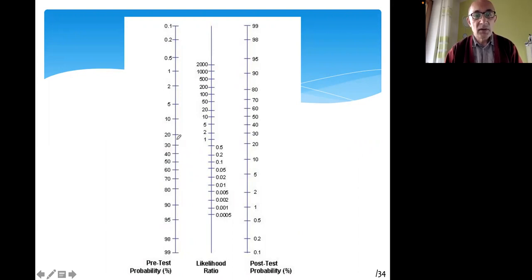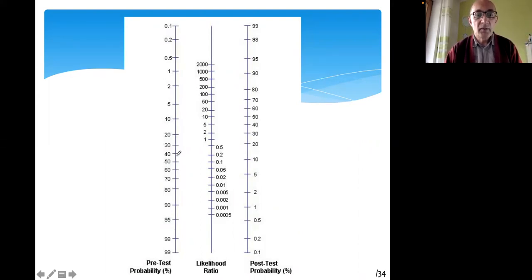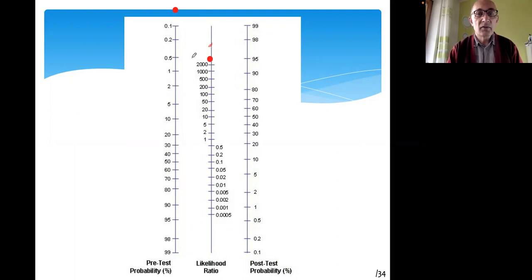You could also use a Fagan's nomogram. You select the pretest probability of a child having a common cold from one axis, then locate the likelihood ratio — in our case 5,000 — on another axis. Combining these two points gives you the post-test probability, which in this example is 50%.